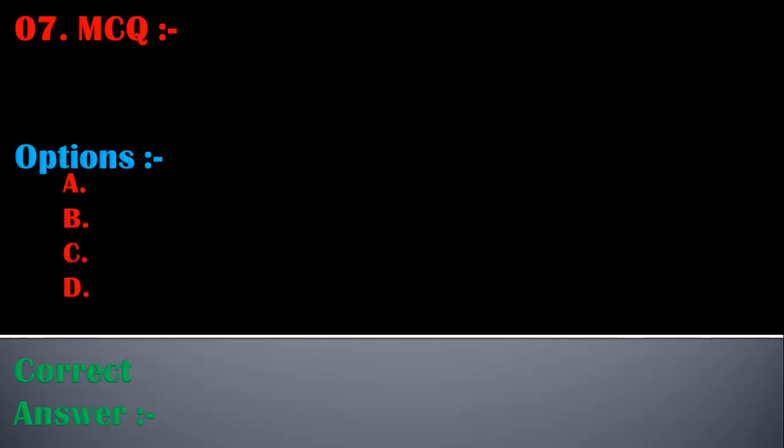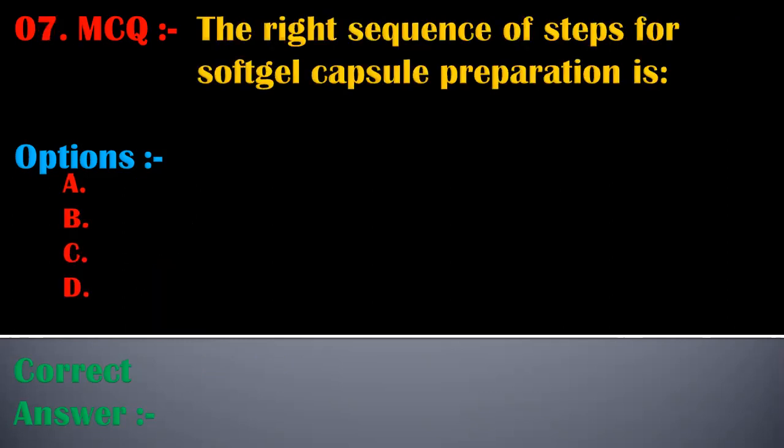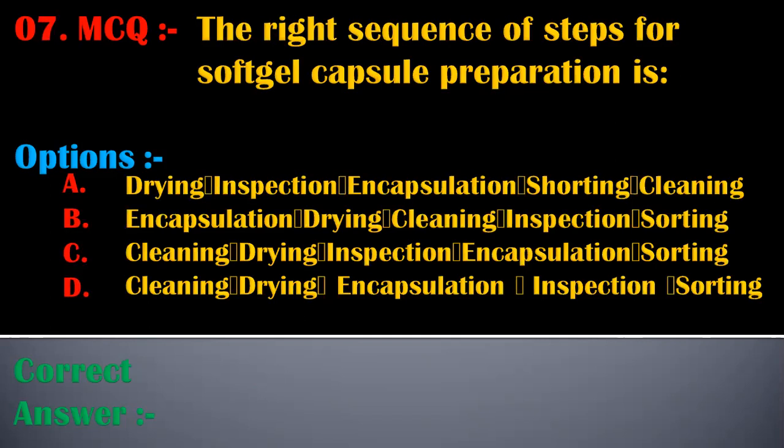The seventh MCQ is: what is the right sequence of steps for soft gel capsule preparation? Option A is: drying, inspection, encapsulation, sorting, cleaning. Option B is: encapsulation, drying, cleaning, inspection, sorting.